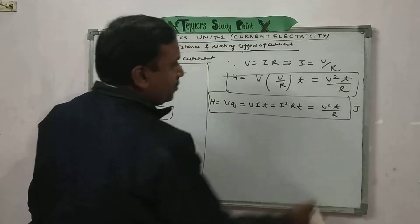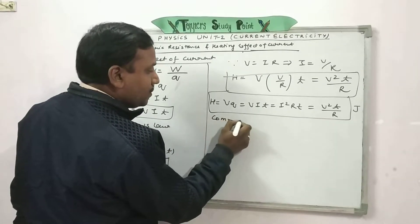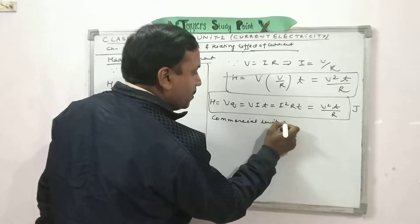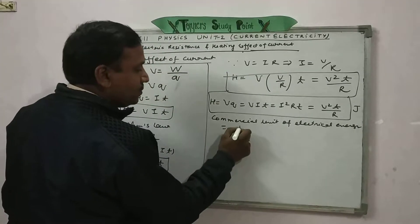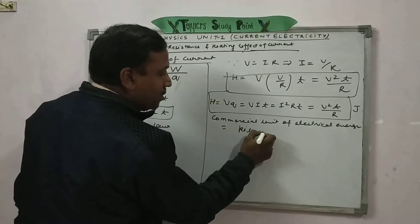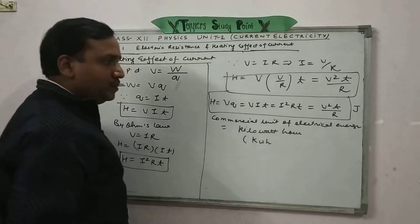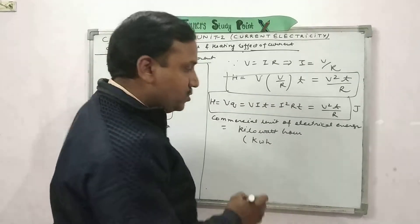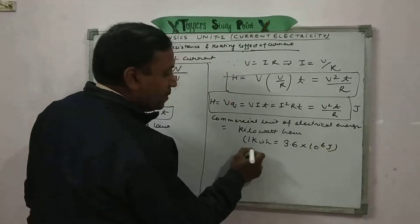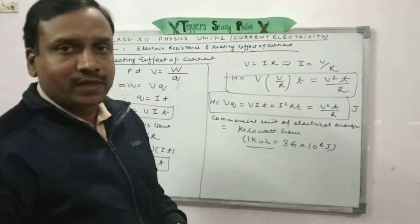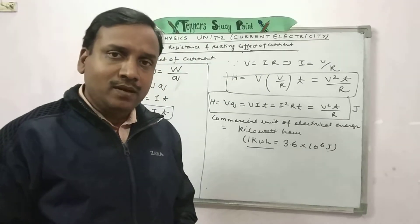For commercial purposes, the commercial unit of electrical energy is kilowatt-hour (KWh). The relation between joules and KWh is: 1 KWh = 3.6 × 10⁶ joules. This is an important relation used to calculate electricity bills.